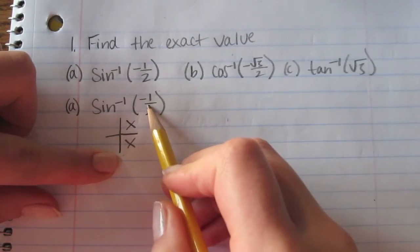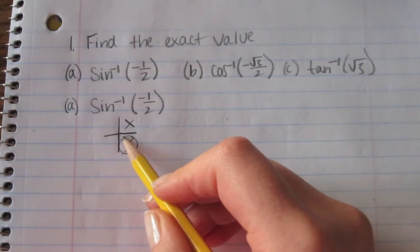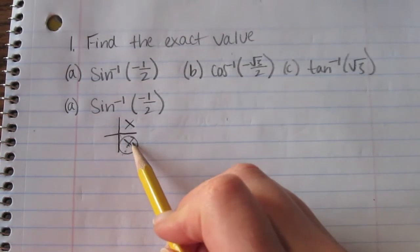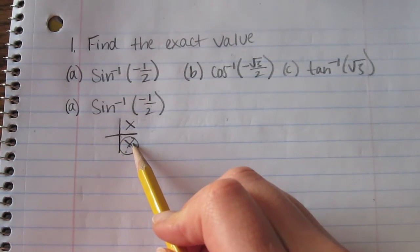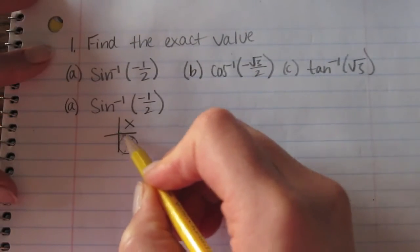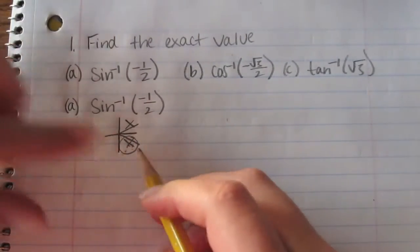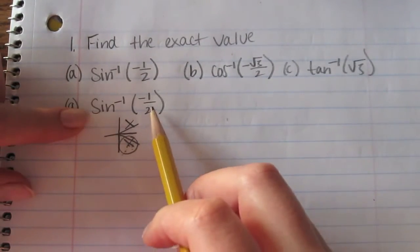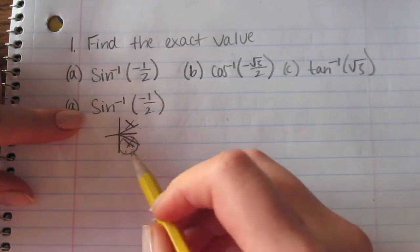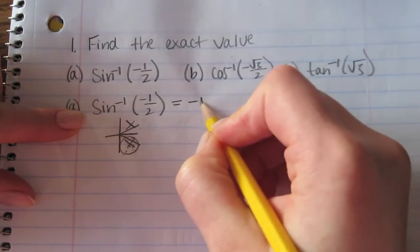Since this is negative, it's going to be in the fourth quadrant. Sine is negative 1 half at 11π over 6, but because that's past π over 2, we're just going to take what it is in quadrant 1 and put a negative sign in front of it. Sine is positive 1 half at π over 6, so in the fourth quadrant, that would be equivalent to negative π over 6.